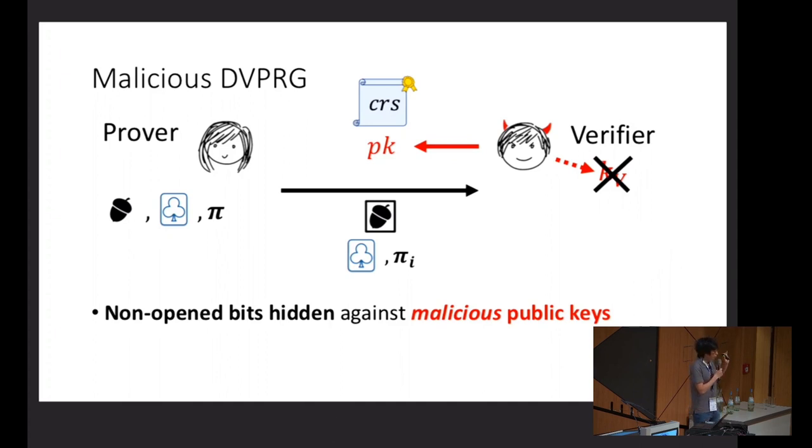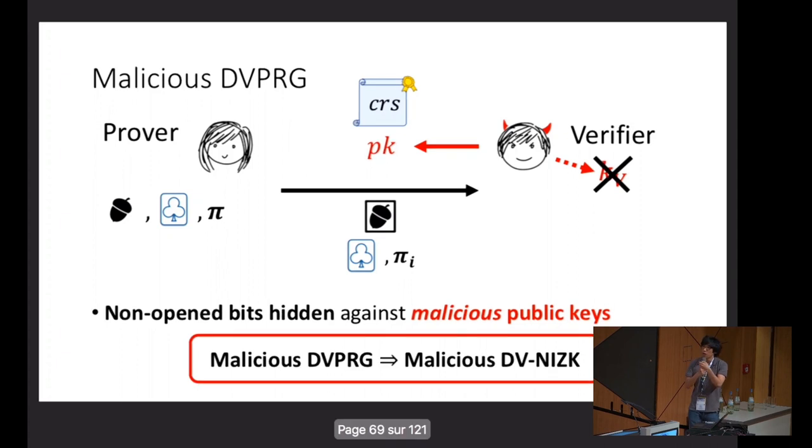The only thing that changes, if the verifier is honest, everything is the same as before. The only thing that changes is when the verifier is malicious. What we used to argue zero knowledge of the designated verifier NIZK in the end is really that when the prover gives a local opening to some bits, the other bits still remain hidden. That's really what makes the hidden bits zero knowledge go through. We want that naturally to hold given maliciously generated public keys. It's not too hard to show that this syntactical change doesn't affect the proof. Malicious DV-PRG implies malicious DV-NIZKs.